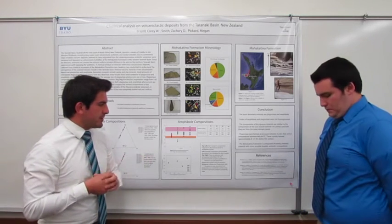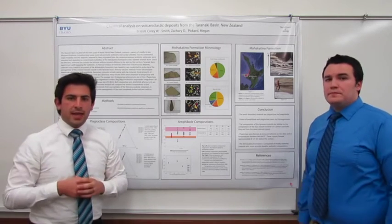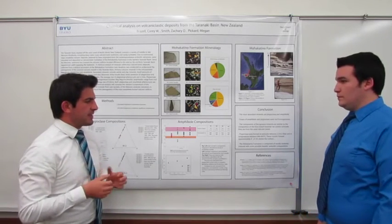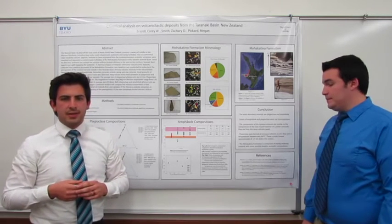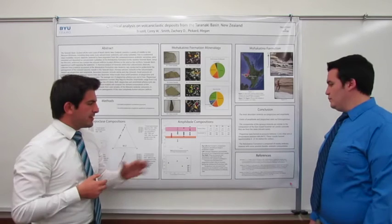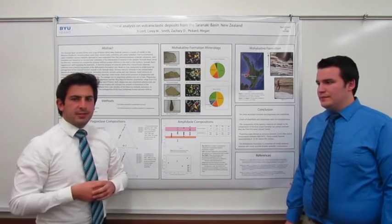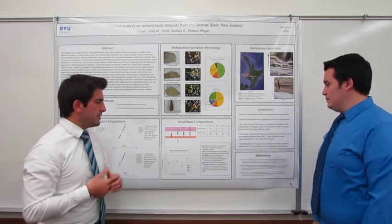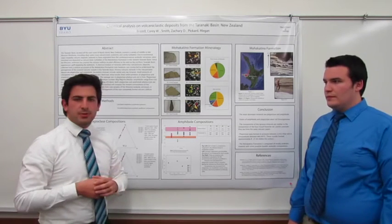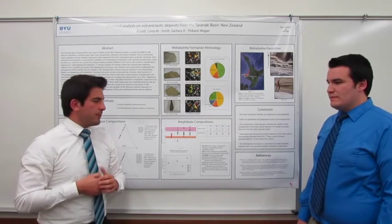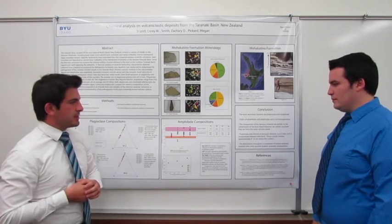Holland and Blundy have an equation for finding temperatures using both plagioclase and amphibole crystals. We found temperature averages of 840 to 945 degrees Celsius. We acknowledge that both of these equations are mainly calibrated for silicic materials, and we applied them to andesitic materials; however, the numbers we found are within the expected range for andesitic materials, so we decided to use these equations.